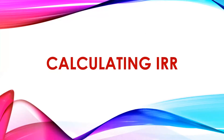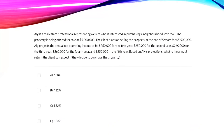Here's an example. Allie is a real estate professional representing a client who is interested in purchasing a neighborhood strip mall. The property is being offered for sale at $5 million. The client plans on selling the property at the end of five years for $5.5 million. Allie projects the annual net operating income to be $250,000 for the first year, $250,000 for the second year, $260,000 for the third year, $260,000 for the fourth year, and $250,000 in the fifth year. Based on Allie's projections, what is the annual return the client can expect if they decide to purchase this property?